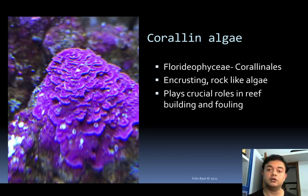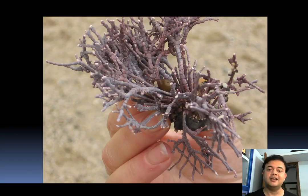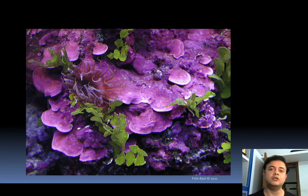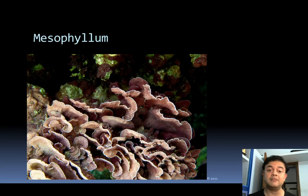Coralline algae also cause fouling — attachment of this kind of alga to a ship's hull and offshore structures creates a visible drag, slowing ships down. You need to get rid of this alga, as well as barnacles and other encrusting organisms, from the ship's hull. Corallina officinalis is a very interesting kind of alga that doesn't even look like a plant — it looks like a coral reef, very hard like rock, but it is a living alga. It remains one of the poorly studied groups, and Bossiella is another example.